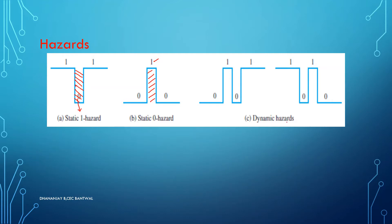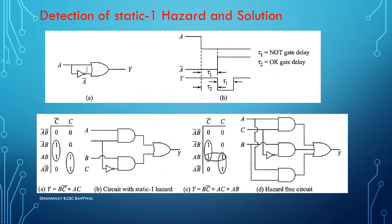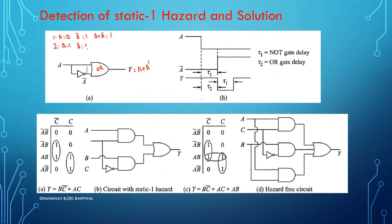Let's check one circuit exhibiting static 1 hazard. This circuit has an OR gate. The output here will be A plus A-bar. If A equals 0, A-bar will be 1, and A plus A-bar will be 1. If A equals 1, then A-bar will be 0, and A plus A-bar will still be 1. So no matter what your input is — 0 or 1 — your output should always be 1.